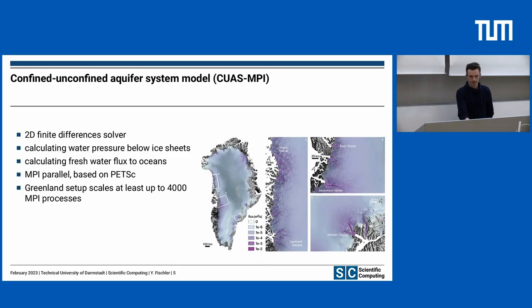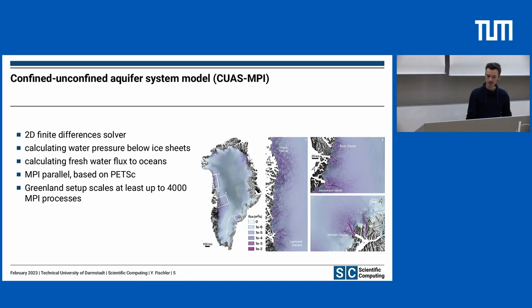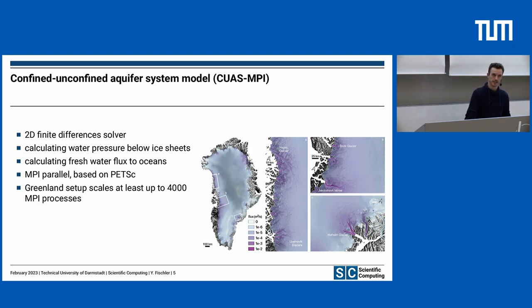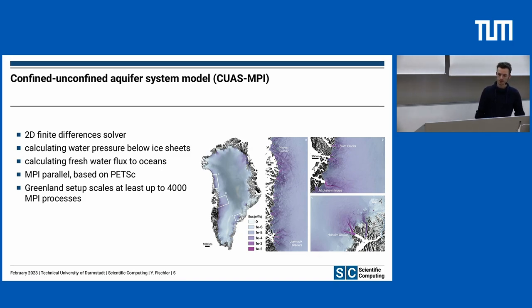All these cases we can model in CUAS-MPI, which uses a porous medium approach. It mimics channels via transmissivity and does not resolve individual channels because it is faster to simulate with a porous medium. CUAS-MPI is a finite differences solver in 2D. The main quantities it computes are the water pressure below the ice sheet — important for ice sheet motion — and the freshwater flux, which is an important input for ocean models. It is also based on PETSc and MPI parallel, supporting approximately 4,000 MPI processes.